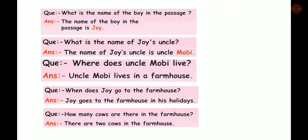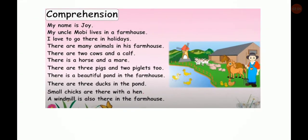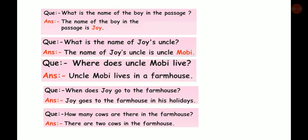So the first question is: what is the name of the boy in the passage? The name of the boy in the passage is Joy. You can't write 'my name is Joy' — you have to write: the name of the boy in the passage is Joy.